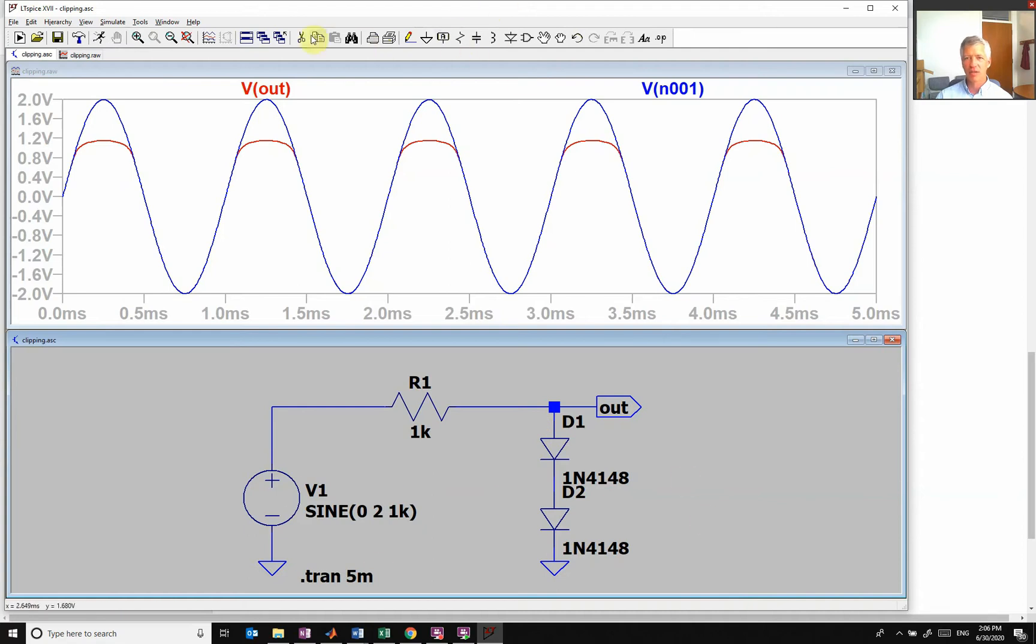So if I want to clip off the negative, then I just have to flip them around the other way so that it blocks the other direction. So these are going to turn on and clip the positive. These are going to turn on when it's negative. And then I do this, and you see that it clips the top and then clips the bottom.